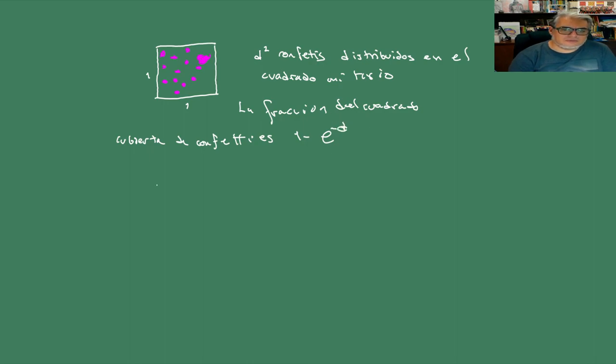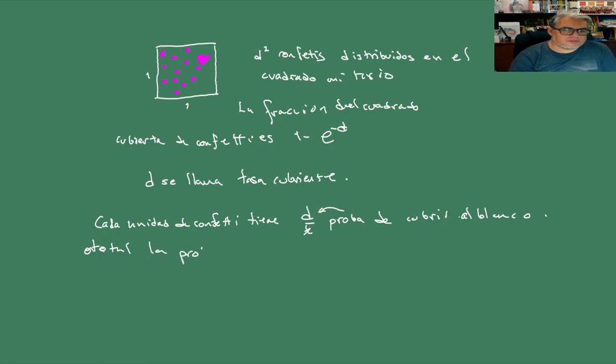La fracción del cuadrado que queda cubierta de confeti es 1 menos e^(-D). A la D se llama tasa de cubierta o tasa cubriente. Vamos a suponer que cada pedazo de confeti, cada circulito, cada unidad de confeti tiene D/K como prueba de cubrir al blanco.